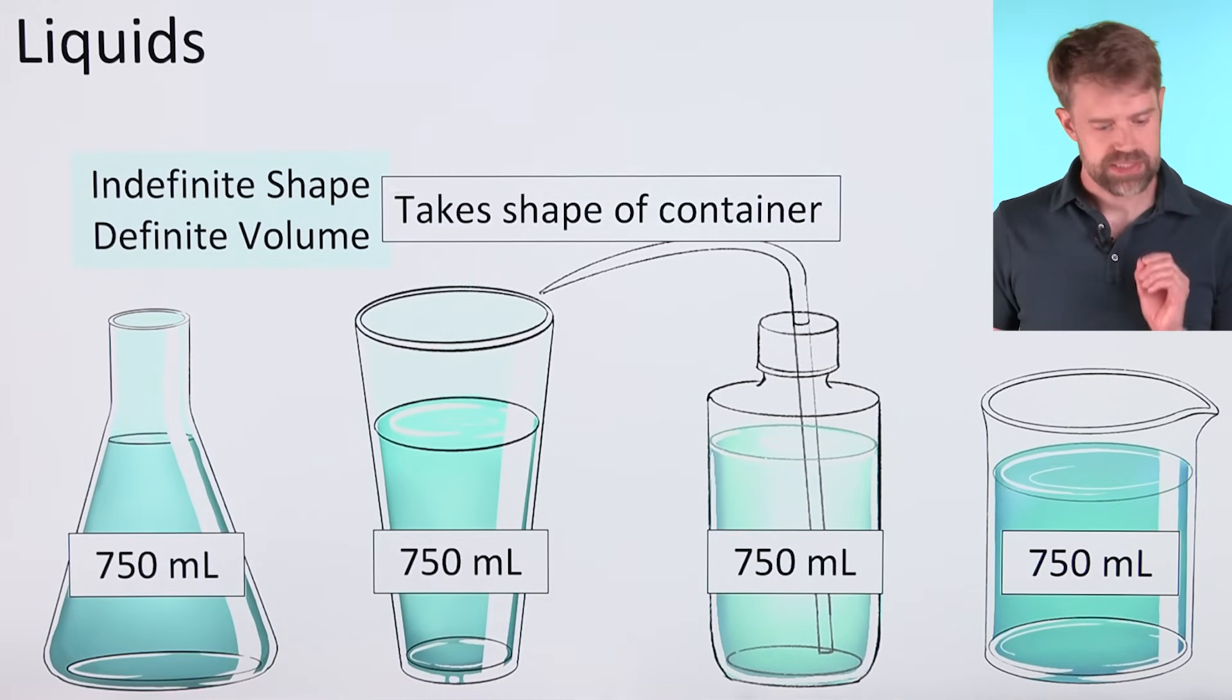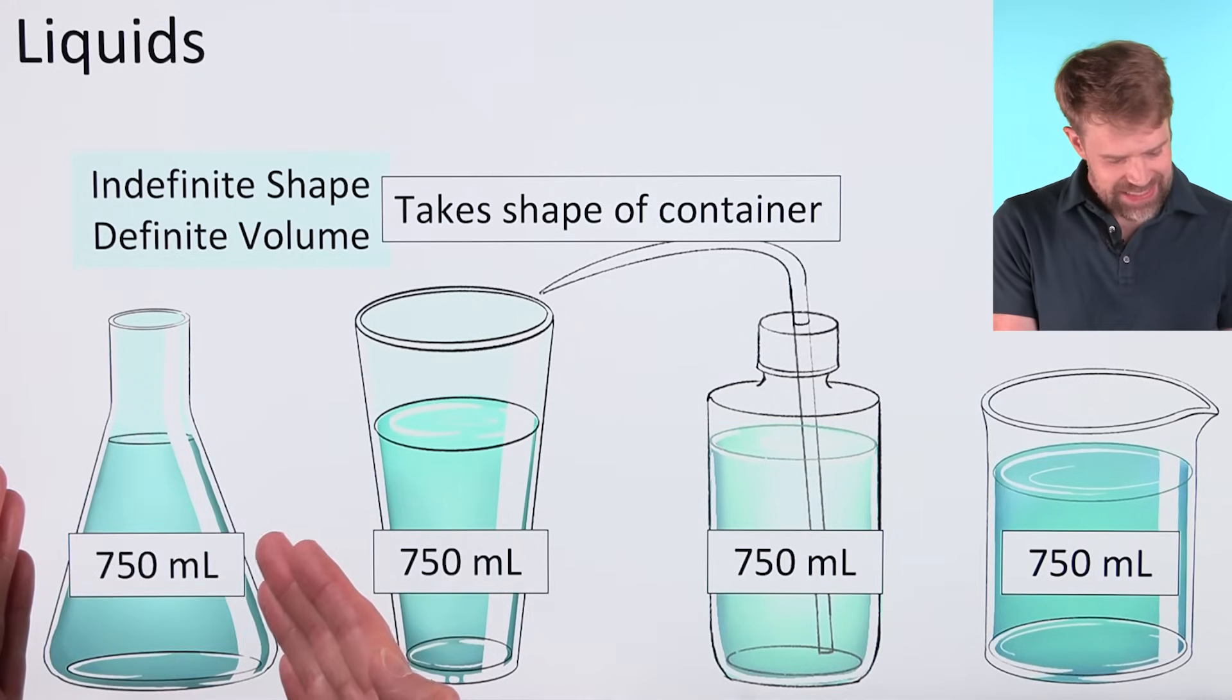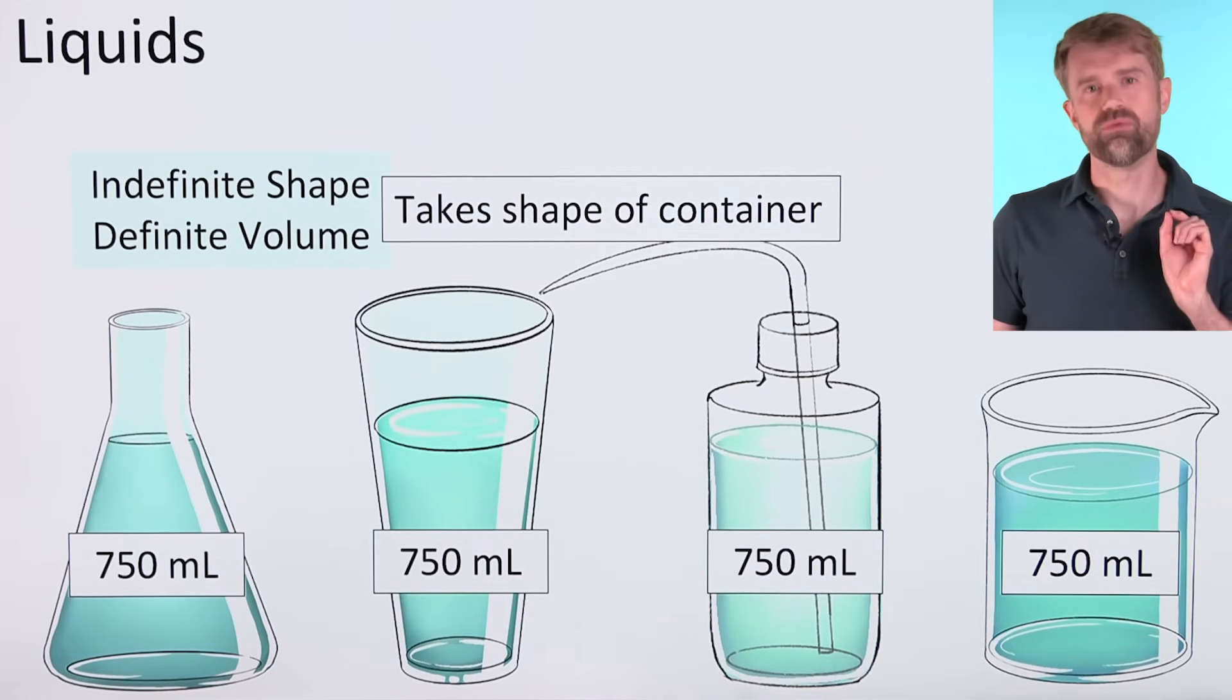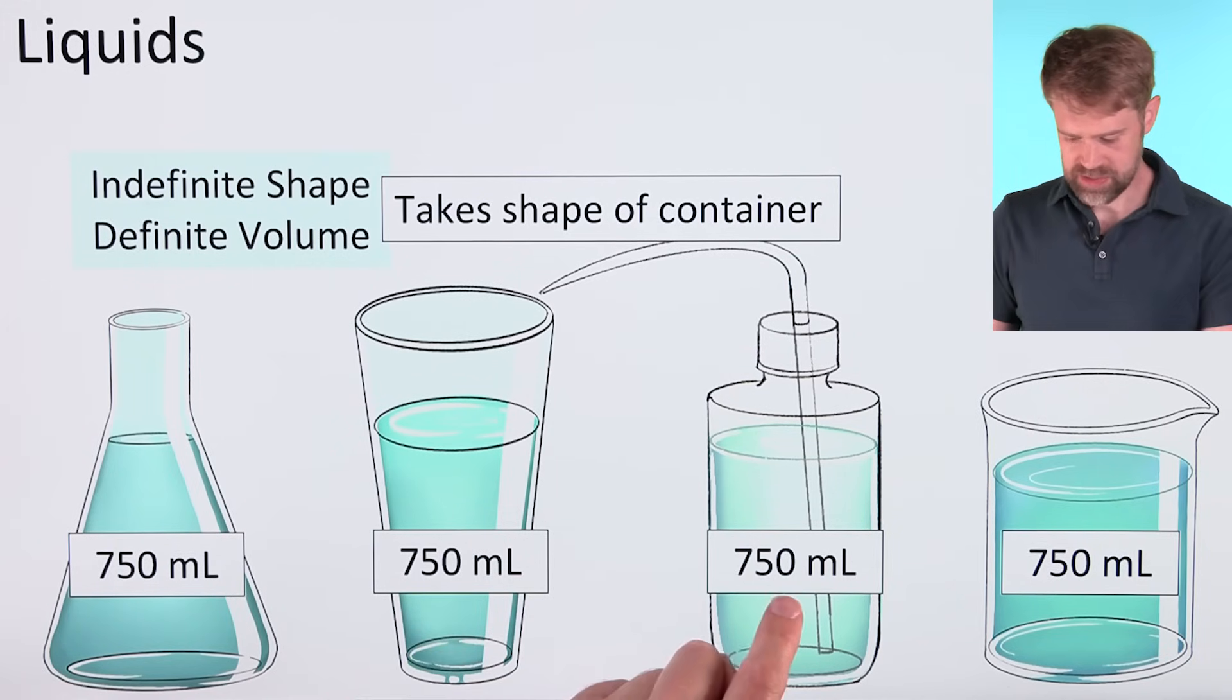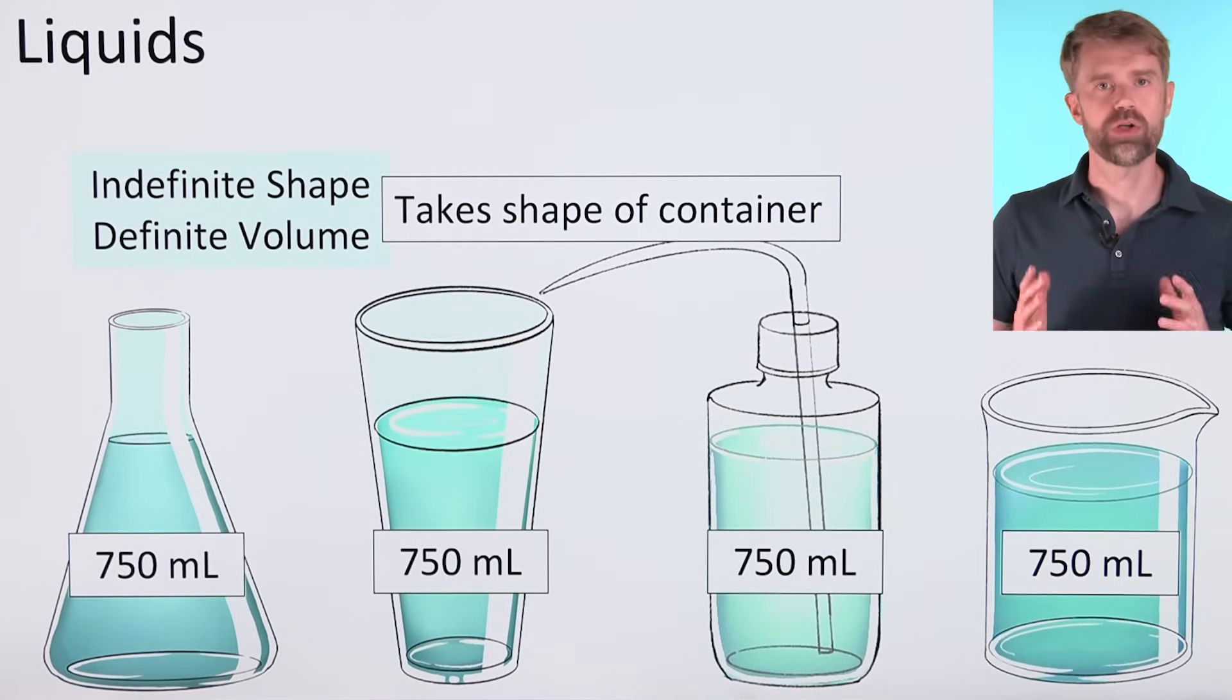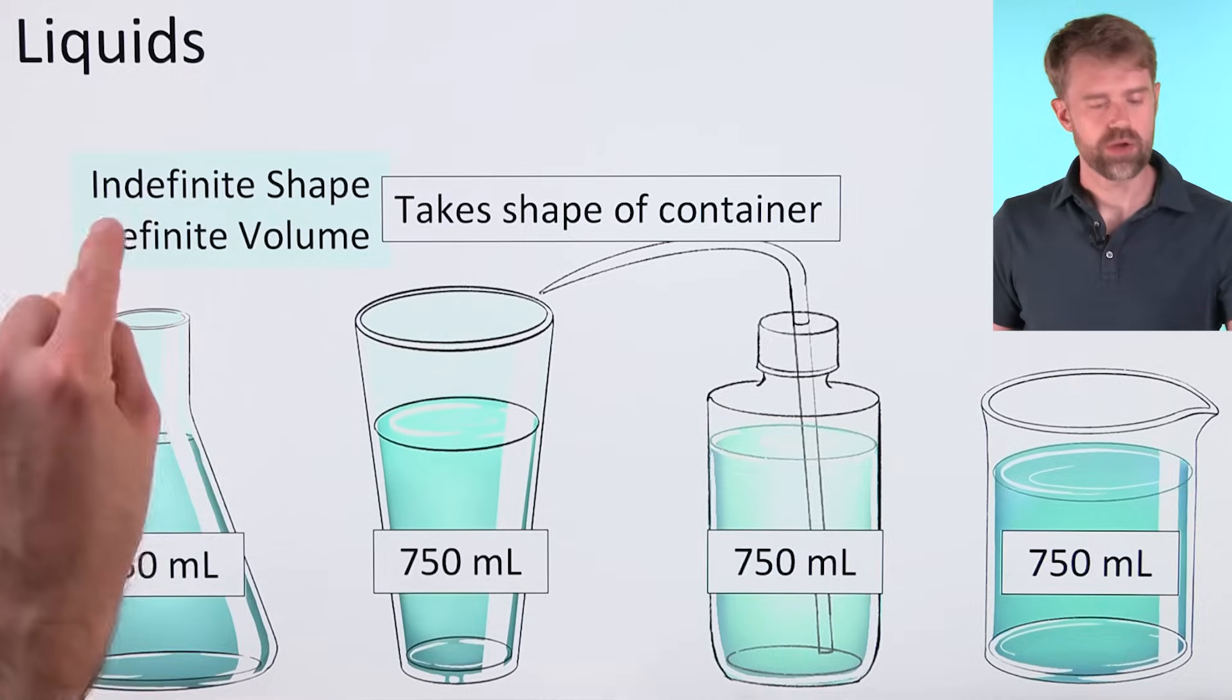But the liquid still has a definite volume. For instance, in each of these containers here, the shape changes, but the volume, the amount of space that the liquid takes up is the same. 750 milliliters. The volume doesn't change. It's definite, even though the shape does.